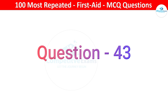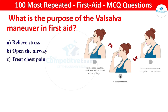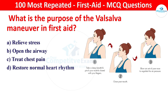Next question: what is the purpose of the Valsalva maneuver in first aid? Options: relieve stress, open the airway, treat chest pain, or restore normal heart rhythm. The right answer is open the airway. The Valsalva maneuver is used to open the airway, especially in cases of obstruction.